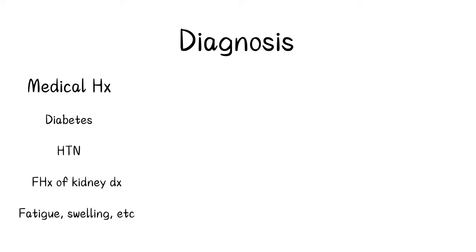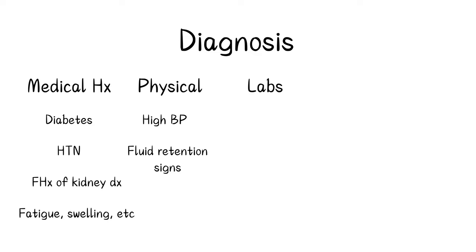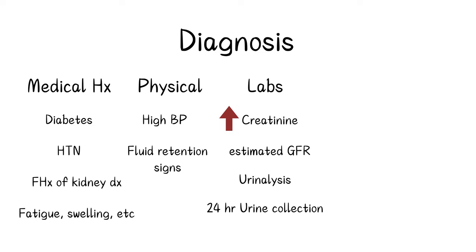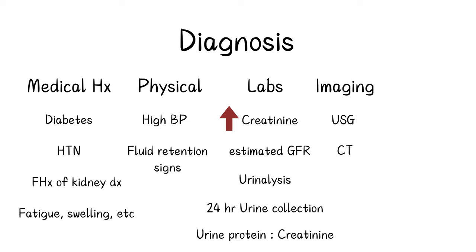How do you diagnose CKD? Diagnosing CKD involves a combination of medical history, physical examination, and lab tests. Lab tests such as elevated serum creatinine, estimated GFR, urinalysis, 24-hour urine collection, and urine protein-to-creatinine ratio can be used. Imaging studies like ultrasound and CT scan can assess kidney size, structure, and any obstructions. A kidney biopsy can also be useful in conditions like SLE.